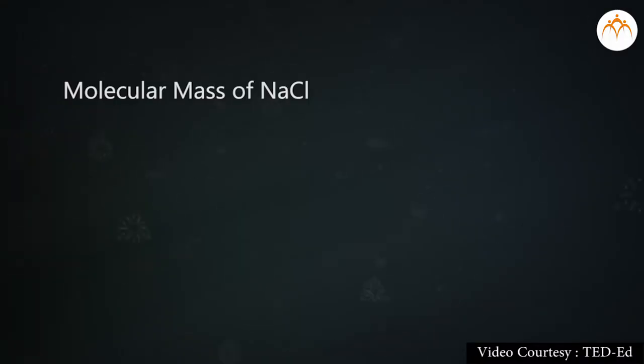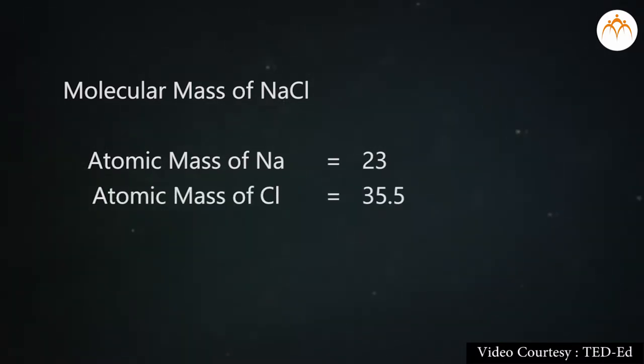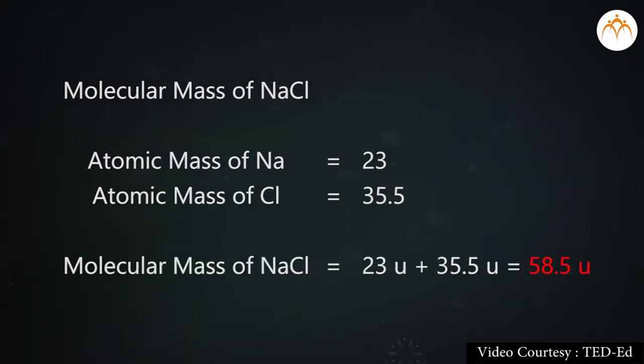Example, molecular mass of NaCl: atomic mass of Na equals 23, atomic mass of Cl equals 35.5, molecular mass equals 23 plus 35.5 equals 58.5 Dalton.